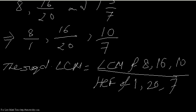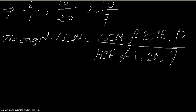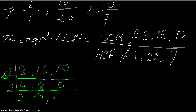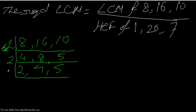Now I find the LCM of the numerators: 8, 16, and 10. Dividing by 2: 4, 8, 5. Dividing by 2 again: 2, 4, 5 remains. Dividing by 2 again: 1, 2, 5 remains.